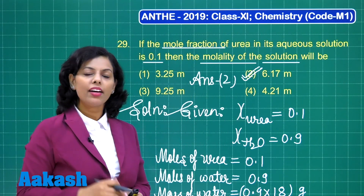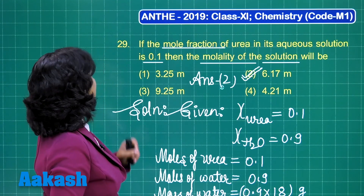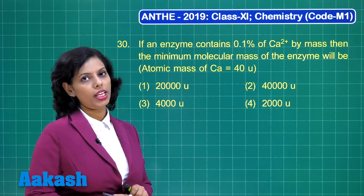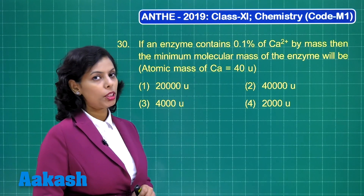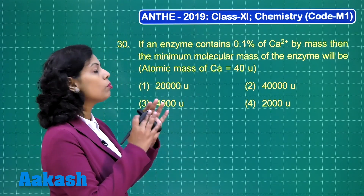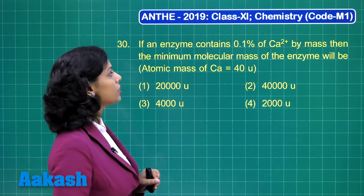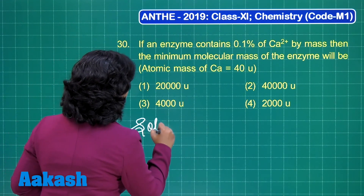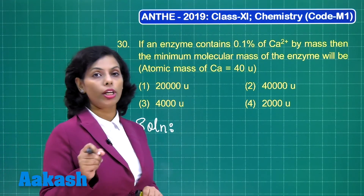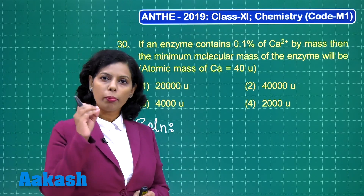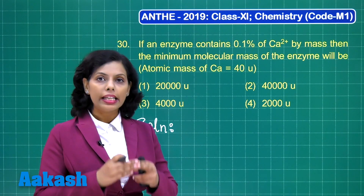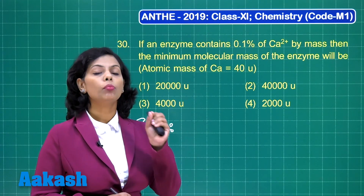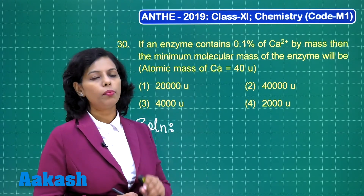Now the turn is for question number 30. If an enzyme contains 0.1% of calcium ions by mass, then the minimum molecular mass of the enzyme will be. You need to find the minimum molecular mass of the enzyme in which 0.1% calcium ions are present. For minimum molar mass, there should be at least 1 mole of calcium ions present in 1 mole of the enzyme.